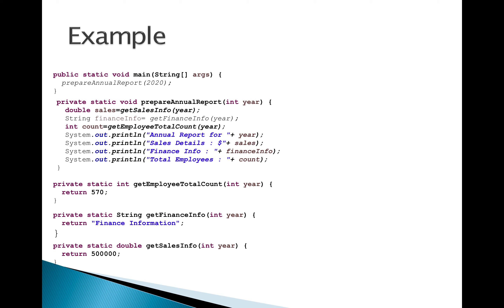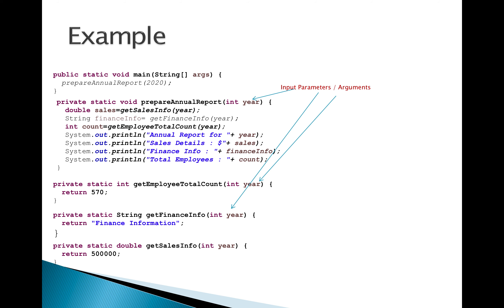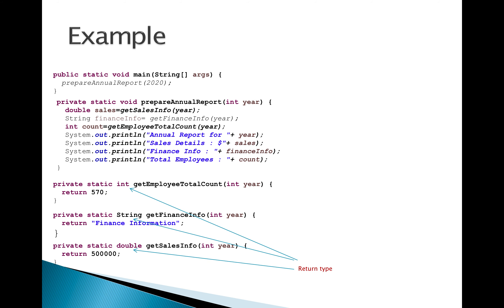The `getFinancialInfo` method returns a String, and `getSalesInfo` takes a year argument and returns a double value - here I have hard-coded return values like 500,000, but in reality they would perform many operations to return actual values. The value 2020 passed at the call site is called the actual value passed to the method. The parameter `int year` inside the method definition is the input parameter or argument. And what is being returned is called the return type.